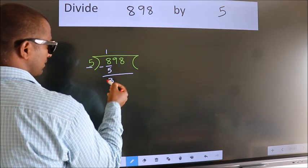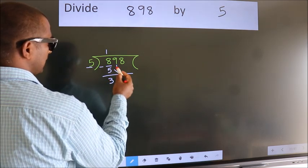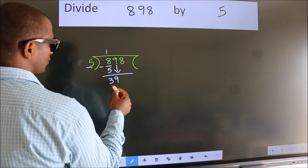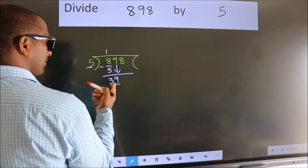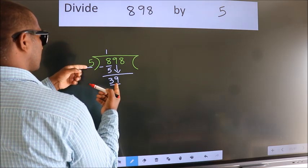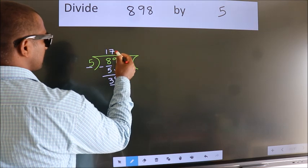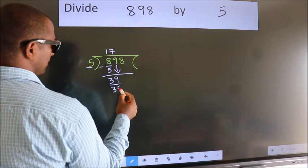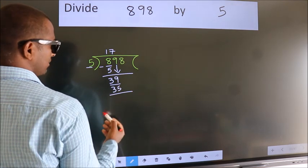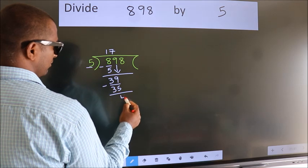After this, bring down the beside number. So 9 down, so 39. A number close to 39 in the 5 table is 5 sevens 35. Now we subtract. We get 4.